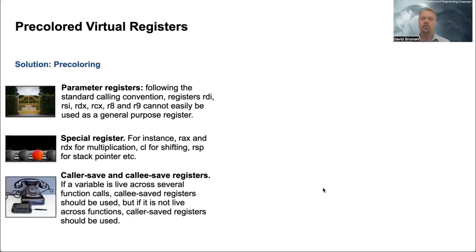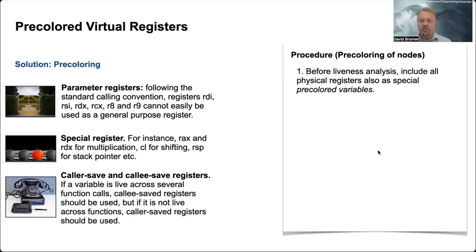So how do you do this? The solution is what's called pre-coloring. So we are using some pre-colored registers to solve this. The good news is that by doing that, we can use the same standard register allocator, just putting in some constraints. So one thing is that before the liveness analysis, you should include all the physical registers as pre-colored variables.